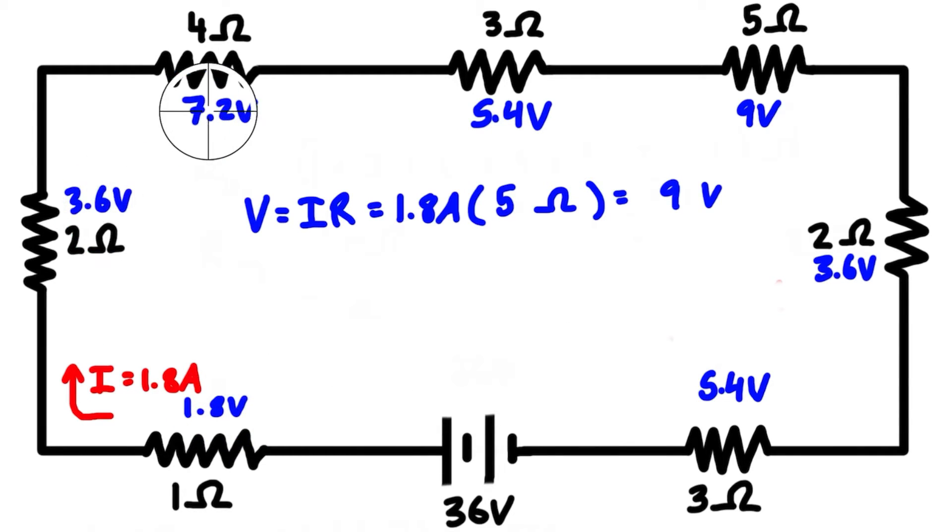Sure enough, if you go around and add up all of these—1.8 volts plus 3.6 plus 7.2 plus 5.4 plus 9 plus 3.6 plus 5.4—that's all the total voltage drops, and that adds up to 36 volts. We supply 36 volts from the battery and drop 36 volts on the way back around the circuit.